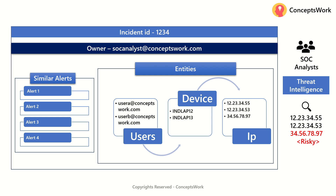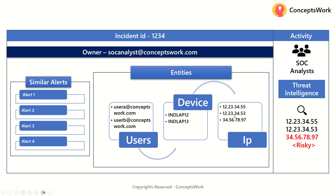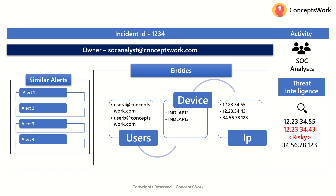But what if I can build a process where I can already enrich the console itself — so that the moment a SOC analyst opens this incident, they immediately see which IPs are involved and which one is a risky IP? This is what is termed as data enrichment: adding context to the entities involved. In this case it is IP enrichment — adding data related to IPs.